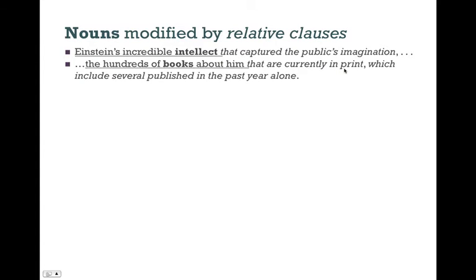Not the ones that are out of print. Do you know the difference between in print and out of print? Books that are currently in print are being published nowadays. Books that are out of print were published in the past but are no longer being printed. So certainly there are even more books — some that are out of print — but here we're only talking about the hundreds of books about him that are currently in print. The word that refers back to the hundreds of books about him. We have the verb are, which is a linking verb (VL), and we have the complement in print, with the adverb currently.